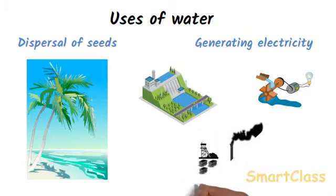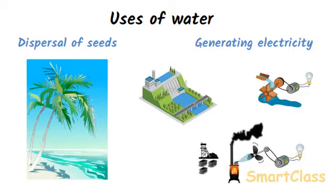At thermal power plants, water is boiled to make steam. The high pressure steam turns the steam turbines. The rotating steam turbines in turn run the generators which produce electricity.